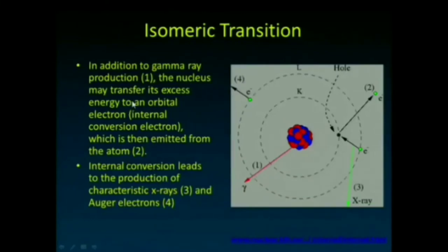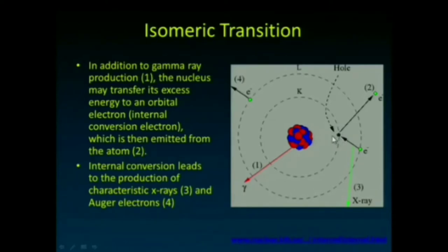That gamma ray is given off, as shown labeled one in this picture. Sometimes we don't see that gamma ray produced. Instead, the excess energy in the nucleus gets transferred to one of the orbital electrons, typically a K-shell electron. We get what are called internal conversion electrons, which head off with kinetic energy equal to what the gamma ray energy would have been minus the binding shell energy of that electron. Unfortunately, these internal conversion electrons deposit dose in the patient.